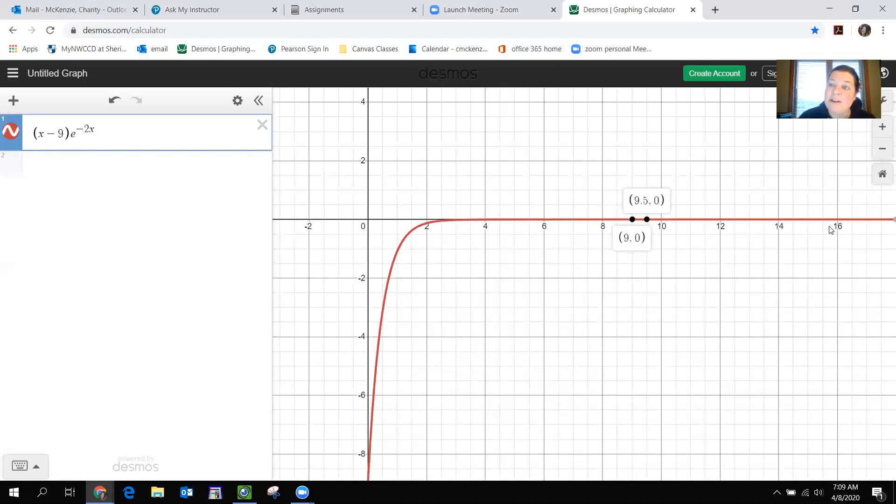It should start to go down from here, but hard to tell. But there you go. If you graph the original, you should be able to see your answer and make sure it's correct.